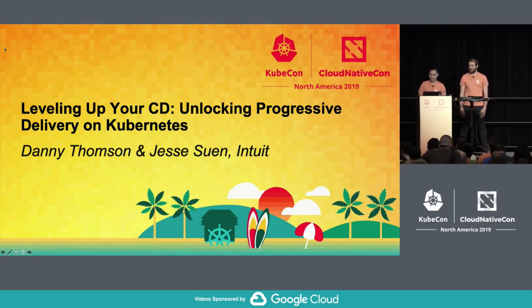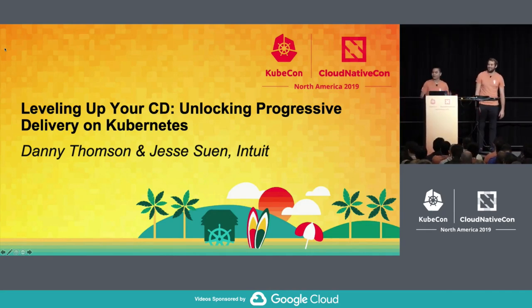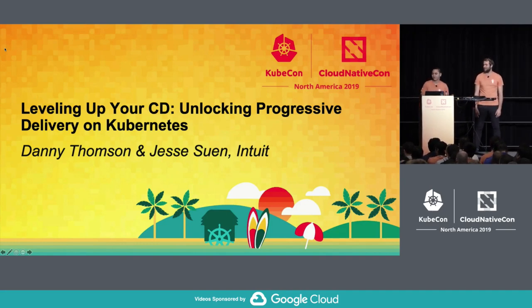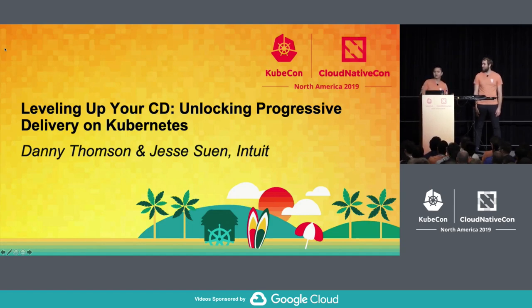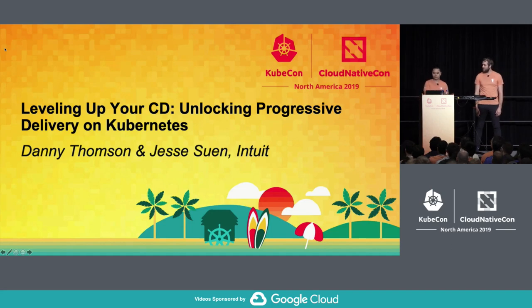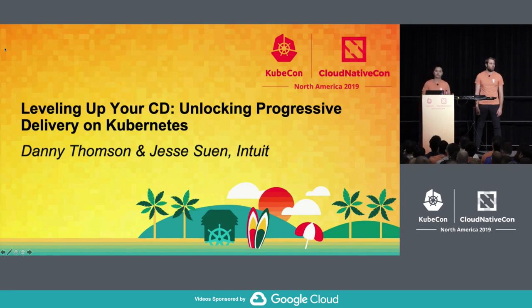Thank you for that introduction. My name is Jesse Soon, and this is Danny Thompson. Danny and I are both part of the Kubernetes platform team at Intuit, and we both work on the Argo project. Argo is a collection of open source utilities that focus on application delivery on Kubernetes, comprised of workflows, CD, events, and most recently Argo Rollouts. Today we'll be talking about progressive delivery and our approach of achieving this on Kubernetes using Argo Rollouts.